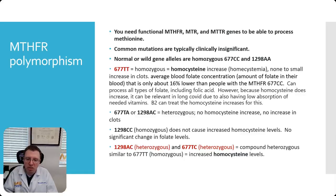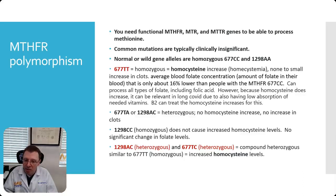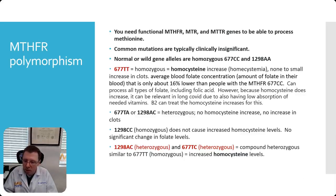In that particular case, it will cause a homocysteine increase or homocysteine anemia. However, there is none to a small increase in clots despite this increase. The average folate concentration in the blood drops by about 16% compared to the wild type. You can still process all folate, including folic acid. Because homocysteine does increase, it is important in long COVID since we also have problems absorbing the B vitamins. In the 677TT homozygous case, B2 or riboflavin can be used to treat this.